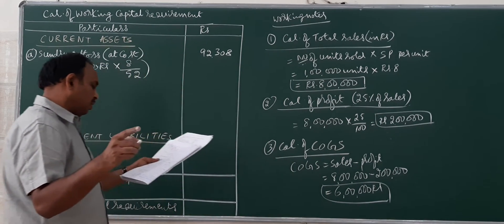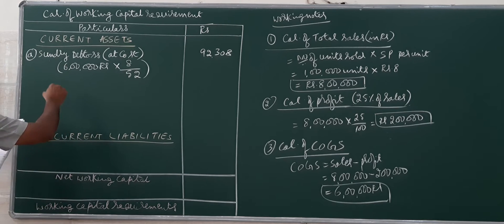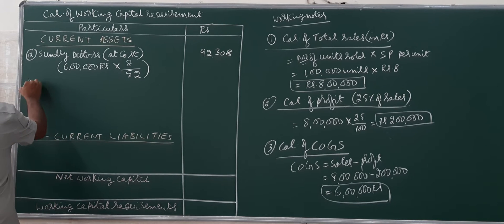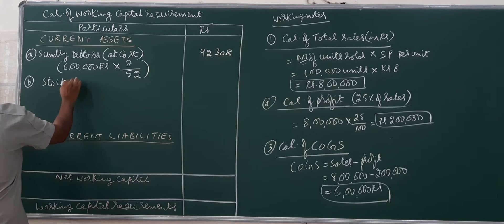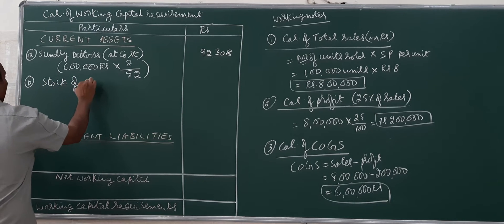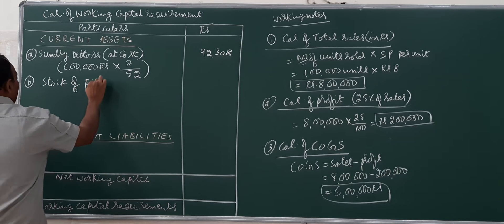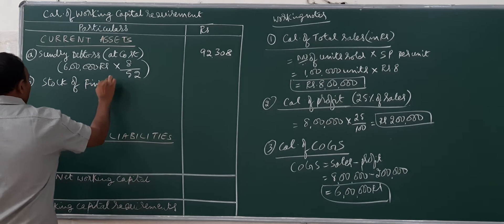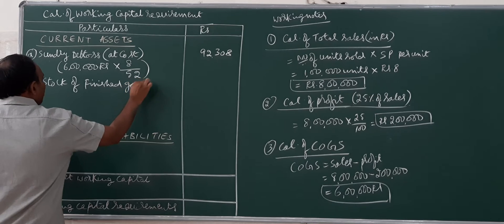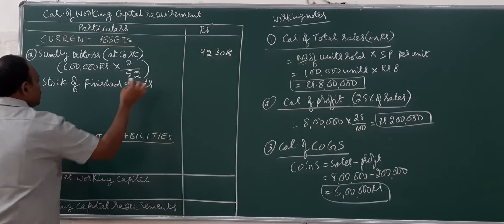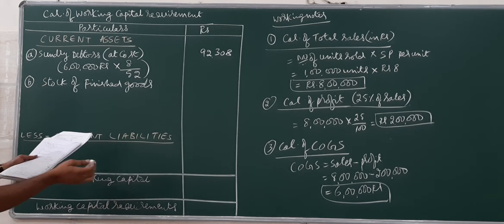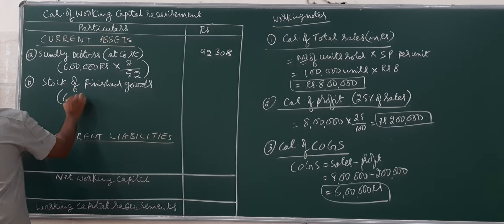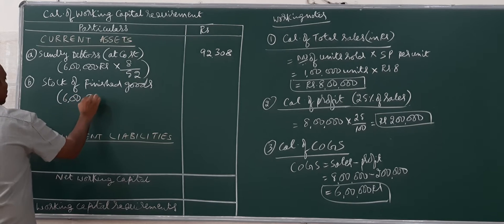Next is stock of finished goods, which is also a current asset. Stock of finished goods is also based on cost of goods sold of 6 lakhs. The average stock holding period is given as 12 weeks, so the stock of finished goods value is calculated using cost of goods sold multiplied by the holding period divided by 52 weeks.